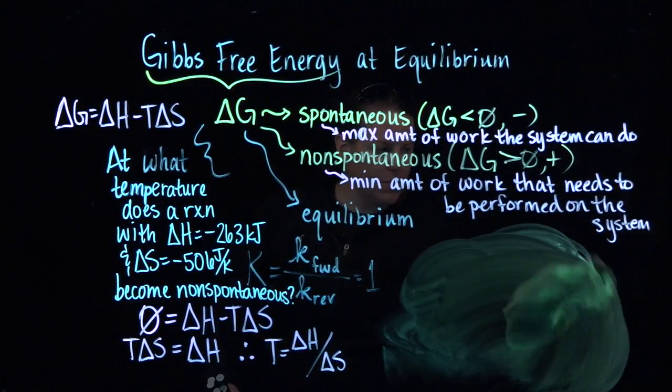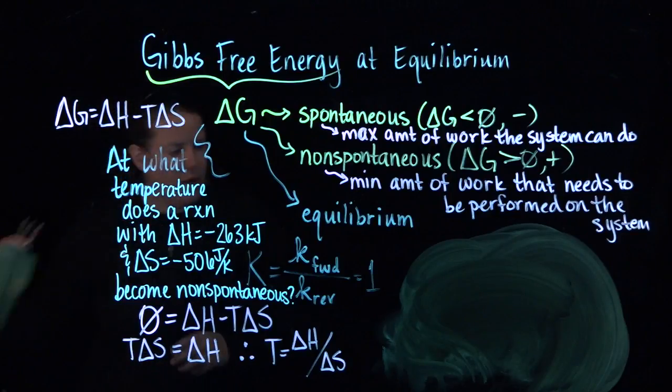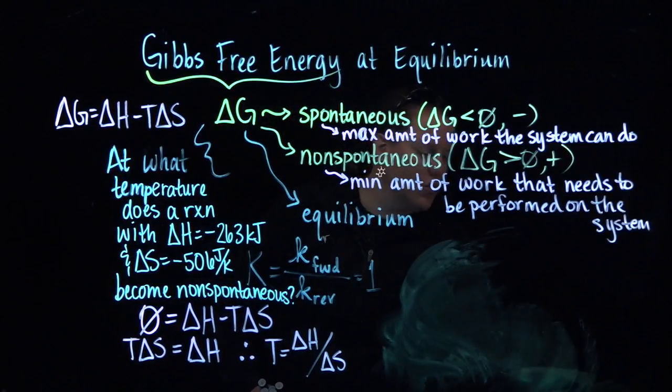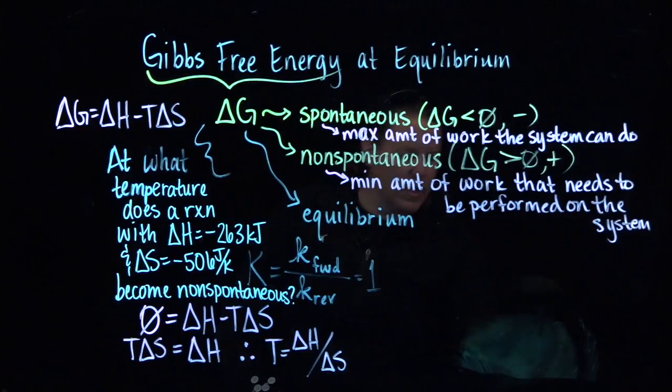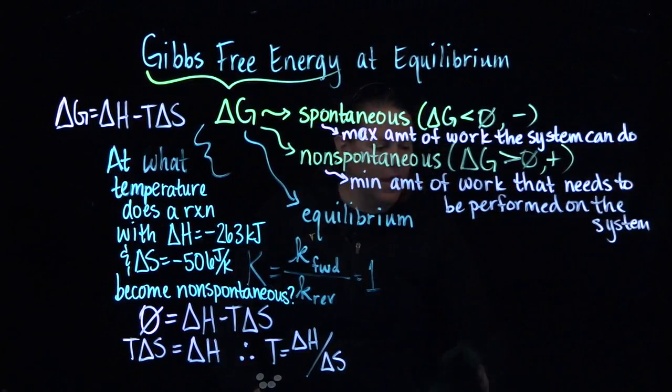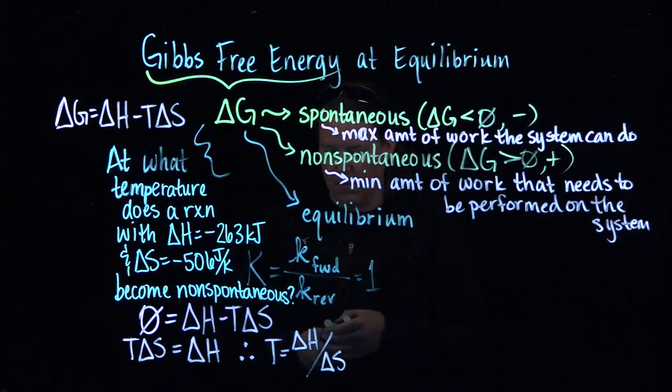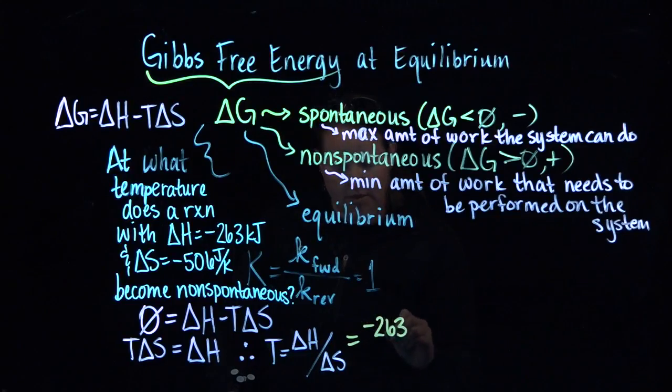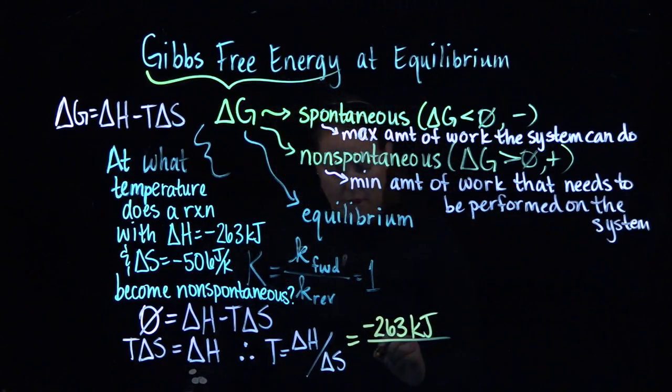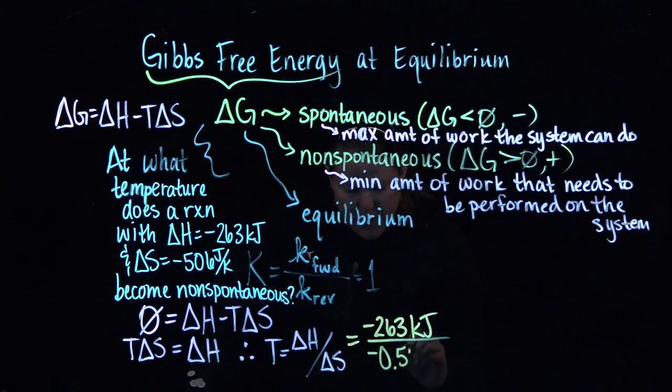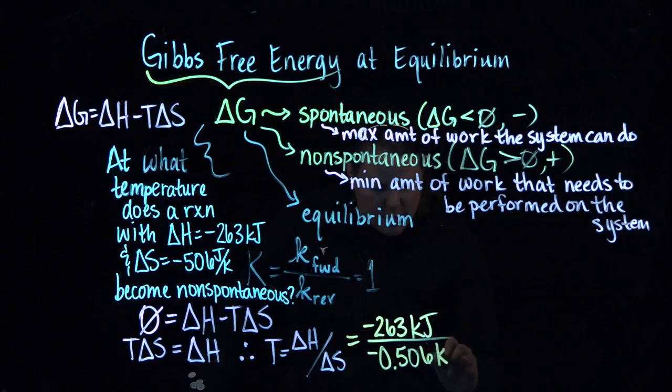And if I plug in my numbers at this point, what you have to remember here is that you have to make the energy units match because they have to cancel out. So for instance, right now, S is in joules. H is in kilojoules. You need them to have the exact same units in order to cancel out. So in this case, I'm going to do negative 263 kilojoules. And I'm going to divide that. I'm going to change this into kilojoules as well, which would be negative 0.506 kilojoules per K.